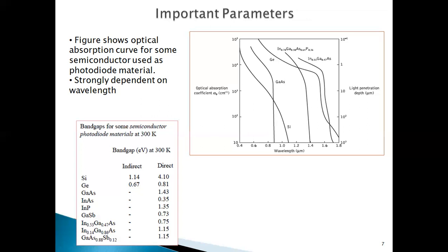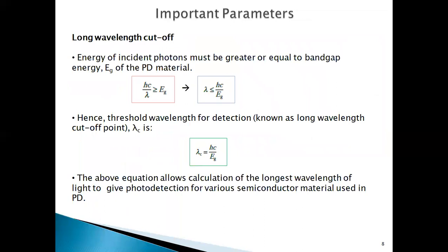The next parameter is the long wavelength cutoff. For the photodiode to operate properly, the energy of the incident photon must be greater than or equal to the band gap energy of the photodiode material. The energy of the incident photon is given by E = hc/λ, where h is Planck's constant, c is the velocity of light, and λ is the wavelength of operation. So this energy must be greater than or equal to the band gap energy E_g.